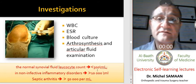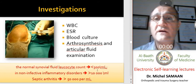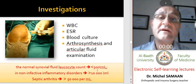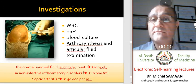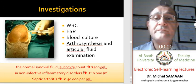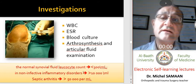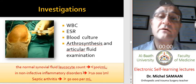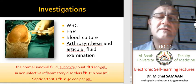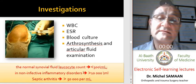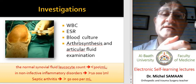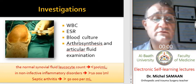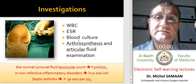In non-infective inflammatory disorders such as gout or calcium pyrophosphate disease, we may have more than 10,000 white blood cells per milliliter. But in septic arthritis, the count rises above 50,000 white blood cells per milliliter. General blood investigations — white blood cell count, ESR, CRP, and blood culture — are important to monitor and diagnose this situation.